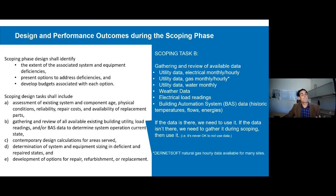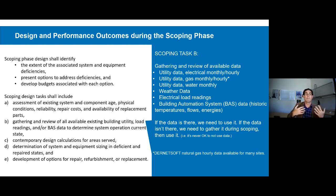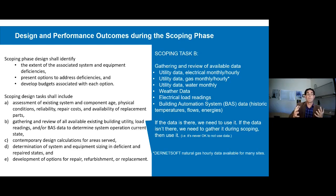Task B is to gather available data and then use it for assessments. We always have utility data available: monthly electrical, natural gas, water use, cost, and weather metrics like cooling degree days or heating degree days. At a very minimum we can calibrate our design ideas to that historical utility data to make sure we're in the right ballpark.